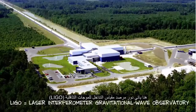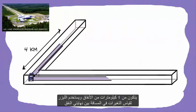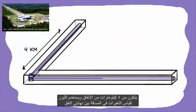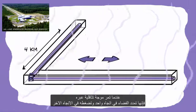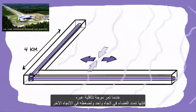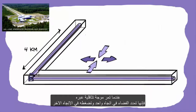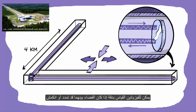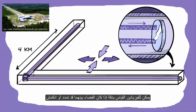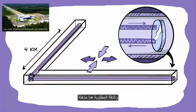This is where the LIGO experiment comes in. It has four kilometer long tunnels and uses lasers to measure the changes in the distance between the ends of the tunnels. When a gravitational wave comes through, it stretches space in one direction and squeezes space in the other direction. By measuring the interference of the lasers as they bounce between the different points, physicists can measure very precisely whether the space in between has stretched or compressed.